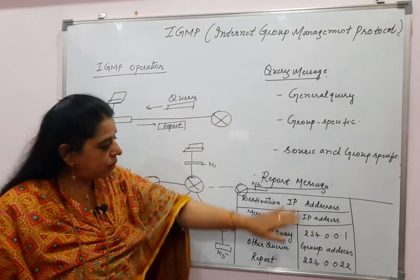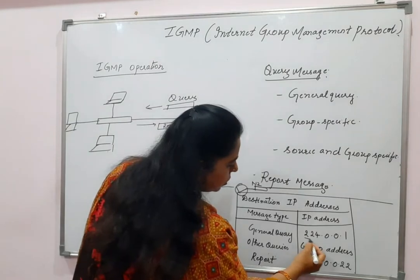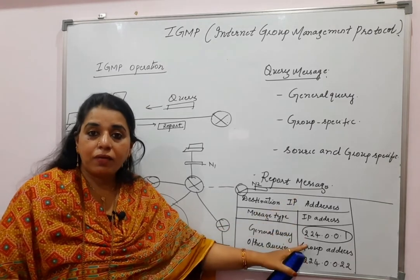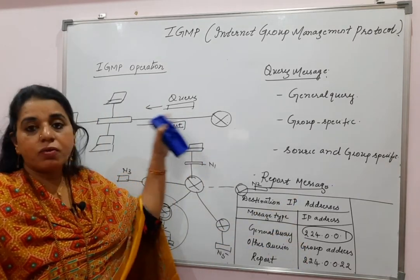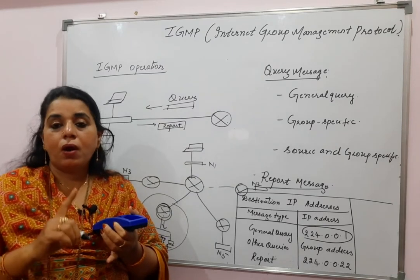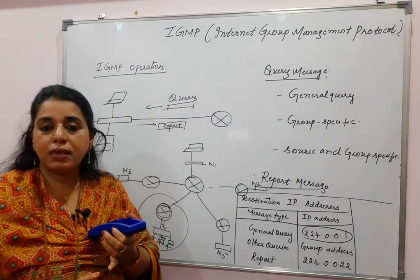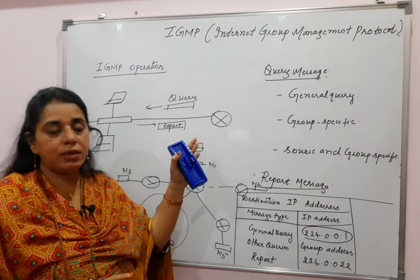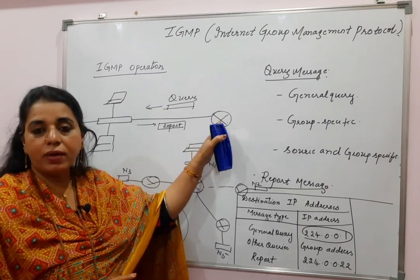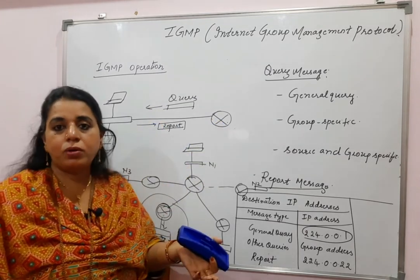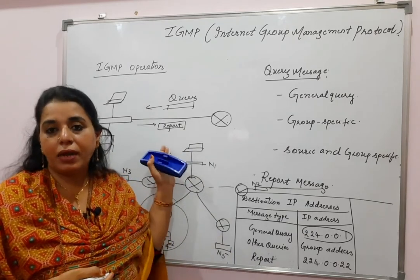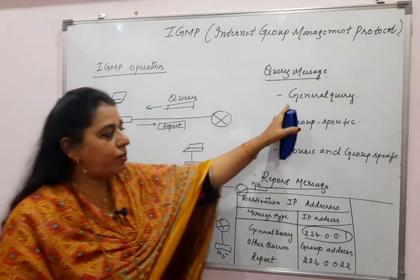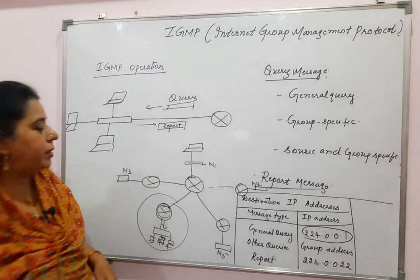For the general query message, the destination address is 224.0.0.1. It is a multicast address, and the significance is that this query is sent to all hosts and all routers. The reason for making other routers also receive the query is so that they refrain from sending another query message to the network while membership information is already being collected.